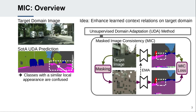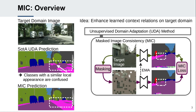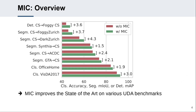Our masked image consistency masks out random target image patches and trains the network to predict the semantics of the entire image. Therefore, the network needs to learn to predict the masked patches from their context. In that way, the network learns to better utilize context and correctly recognizes difficult regions. MIC significantly improves the performance of classification, segmentation and detection UDA.